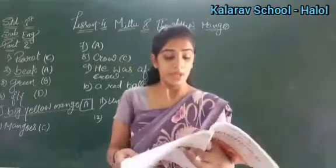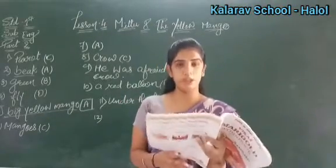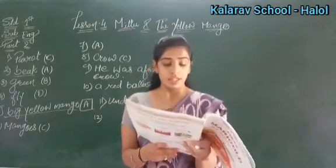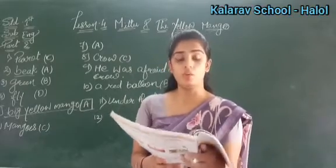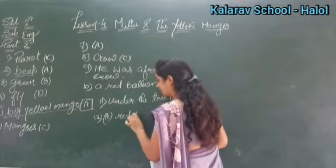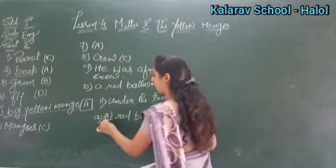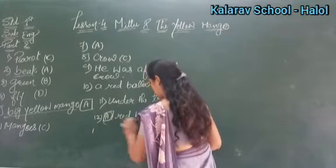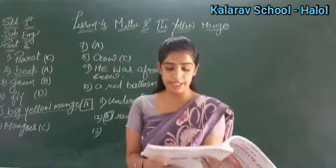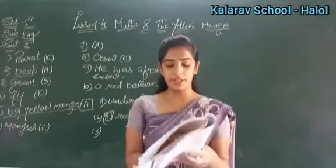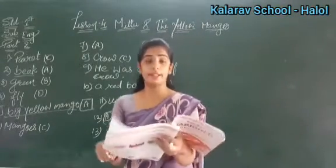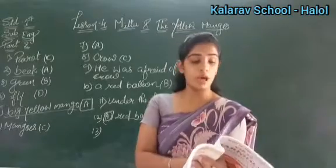Question 12: What did Mitu pick up? Options are red balloon, black crow, yellow mango, or green mango. He picked up a red balloon, so the box answer is A. Question 13: Where was the crow sitting? The crow was up the tree, so option B is correct — up the tree.